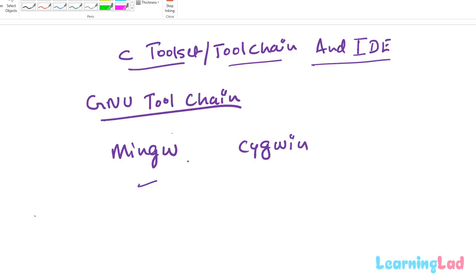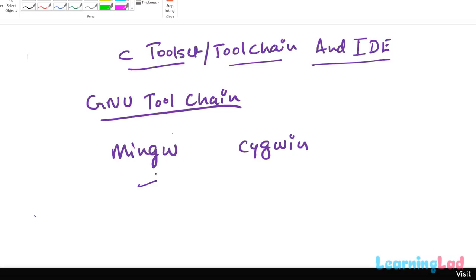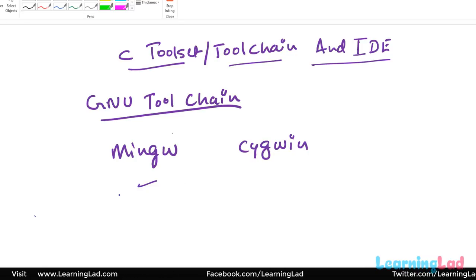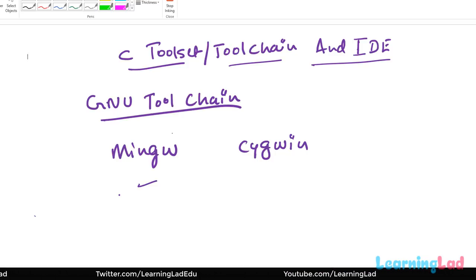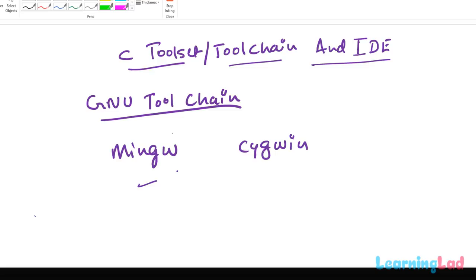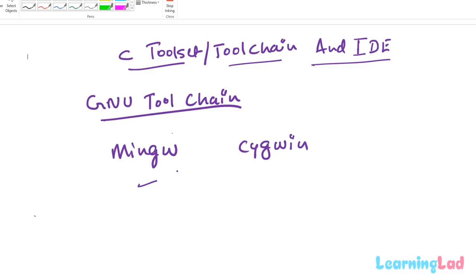You can install either of these and follow along with all the tutorials. When you install MinGW or Cygwin, they provide a single command by which you can perform all the compilation and linking and produce the executable. However, if your project becomes larger and contains a lot of files, it will be difficult to manage them, because these tools don't provide a graphical user interface for writing and executing programs — they are command-line utilities, and you need to write commands in the command line to execute them.